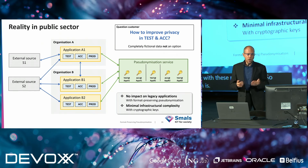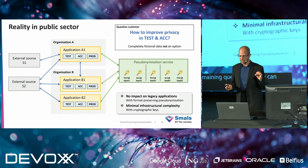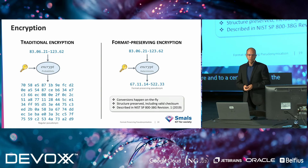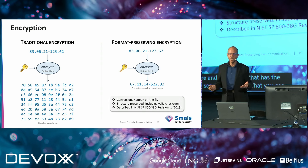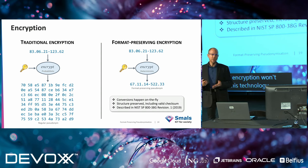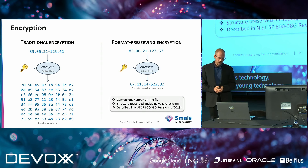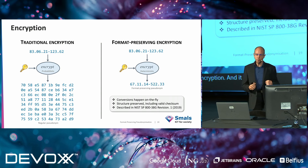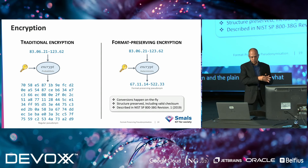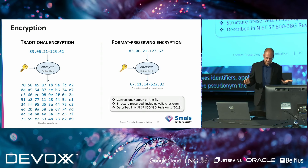A remaining question is: how can we, with a simple cryptographic key of 32 bytes, convert a social security number into something with the same structure — a pseudonym that has the same structure as a social security number? Traditional encryption won't help as it destroys all structure. But there is a technology called format-preserving encryption, which has the beautiful property that the output of the encrypt operation — the ciphertext — maintains the structure of the input — the plaintext. Our format-preserving pseudonymization service receives identifiers, applies this encryption, and returns the pseudonym, which is in fact just an encryption.